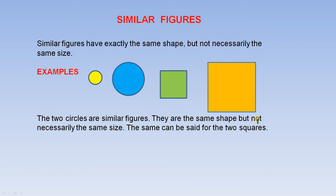Similar figures. Similar figures have exactly the same shape but not necessarily the same size. The two circles are similar figures. They are the same shape but not necessarily the same size. The same can be said for the two squares.